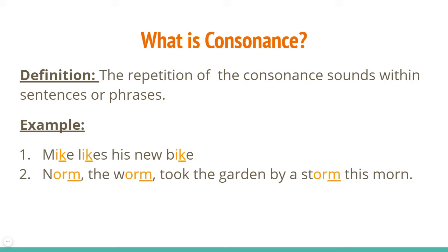Norm the worm took the garden by storm this morn. We've got the repetition of the K and M sounds here. So it's that consonant sound but it's within the words as well as those sentences or phrases. So remember, alliteration is at the beginning, and consonance is kind of the middle to end of the word.